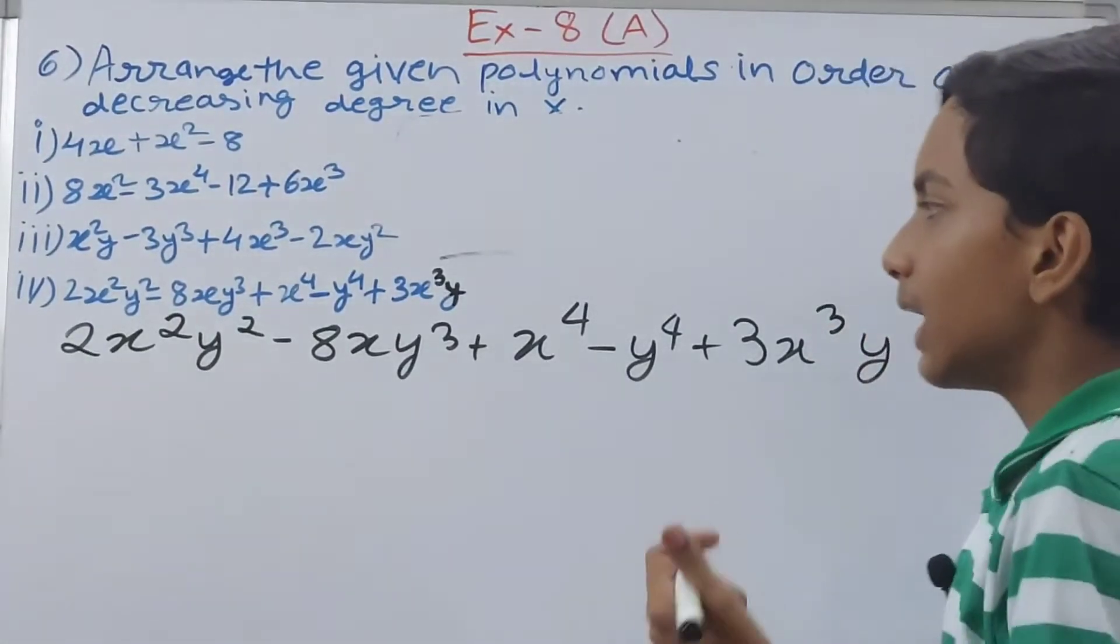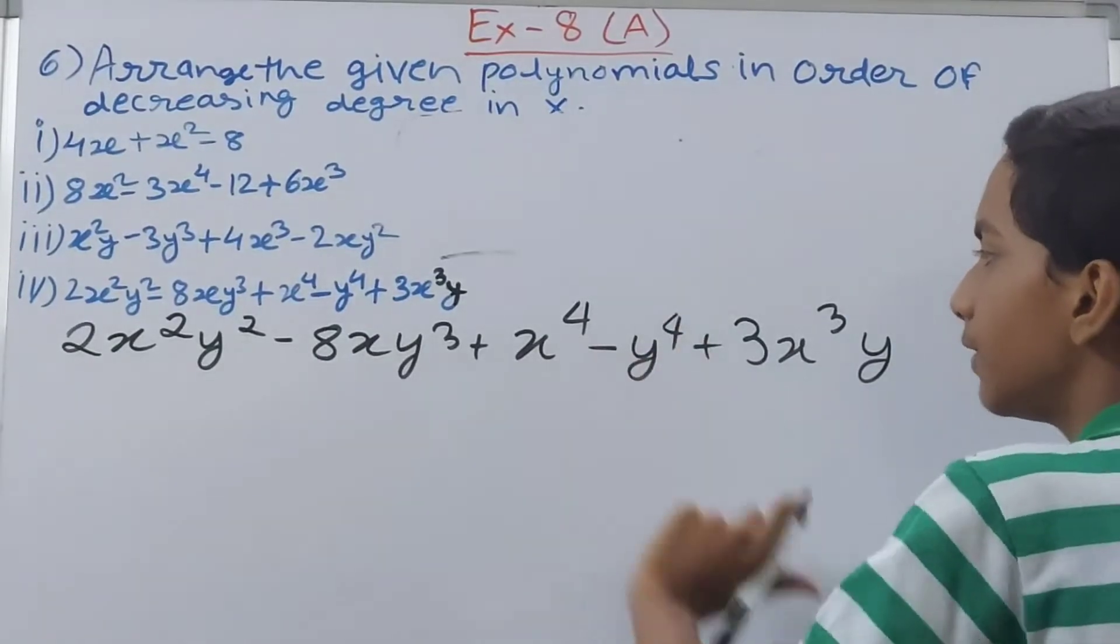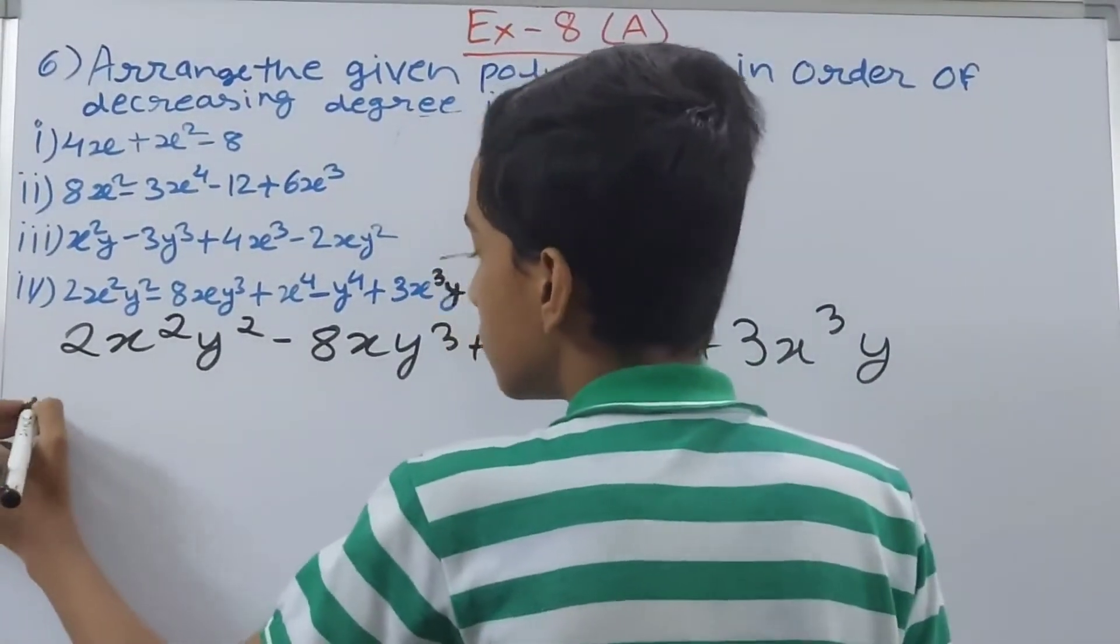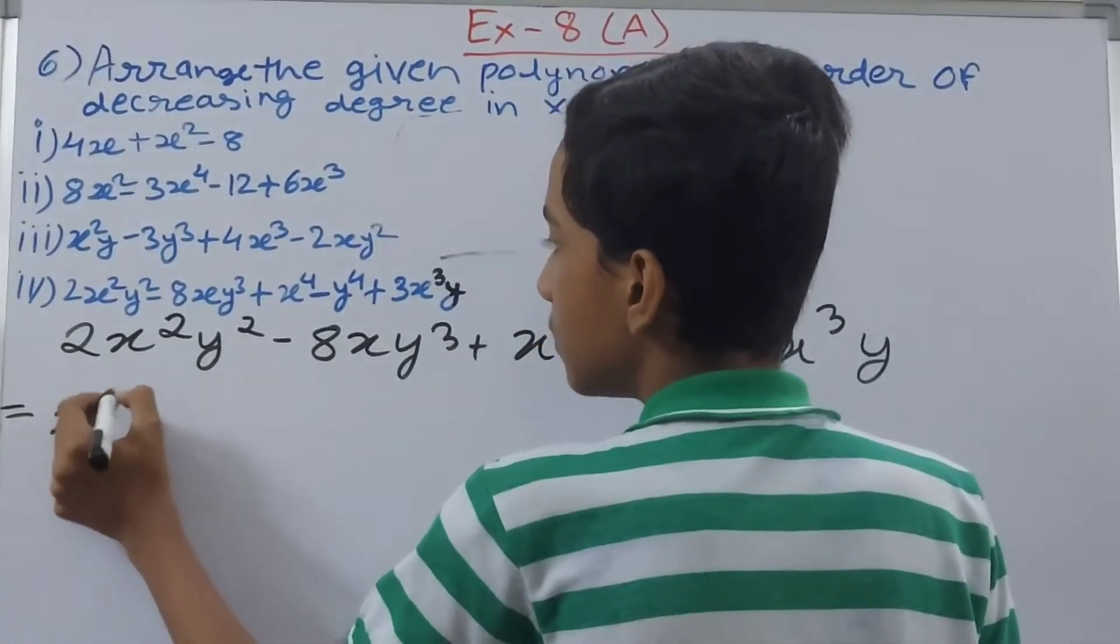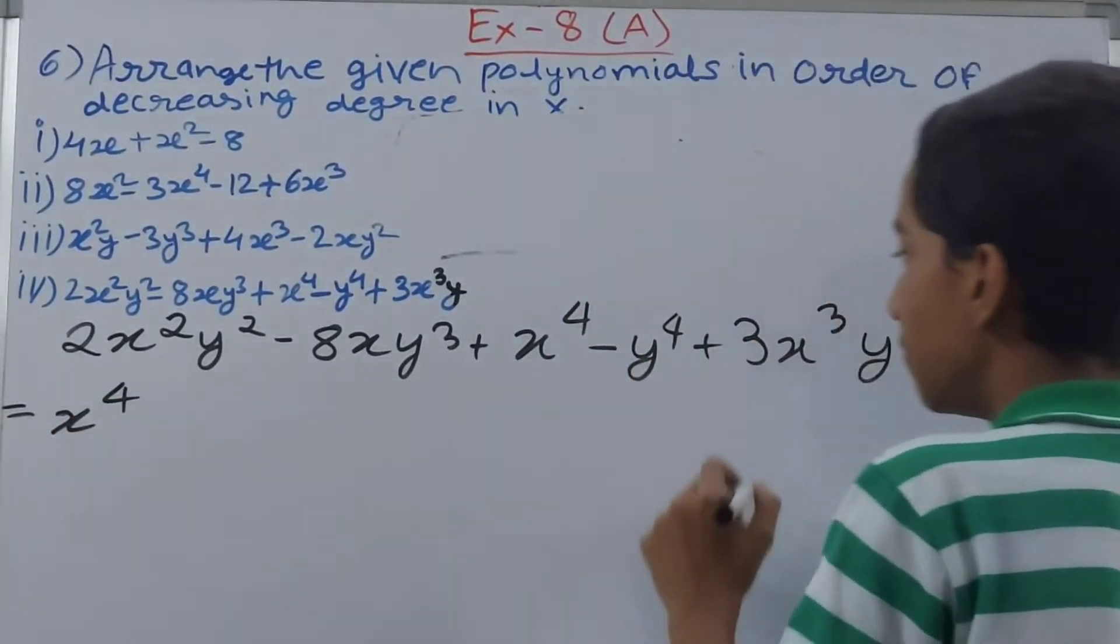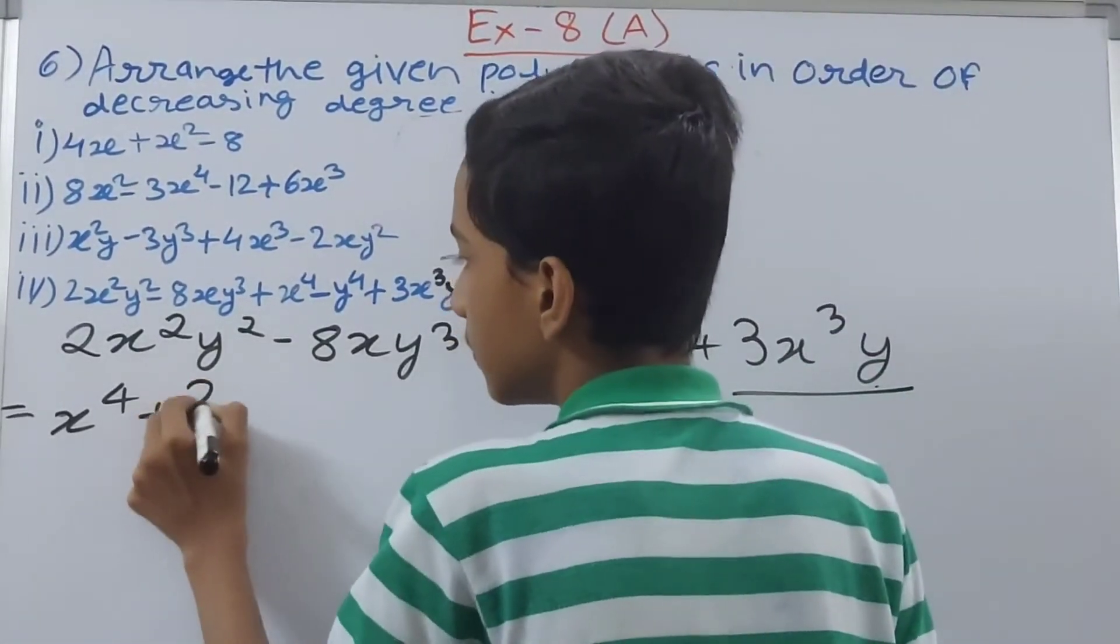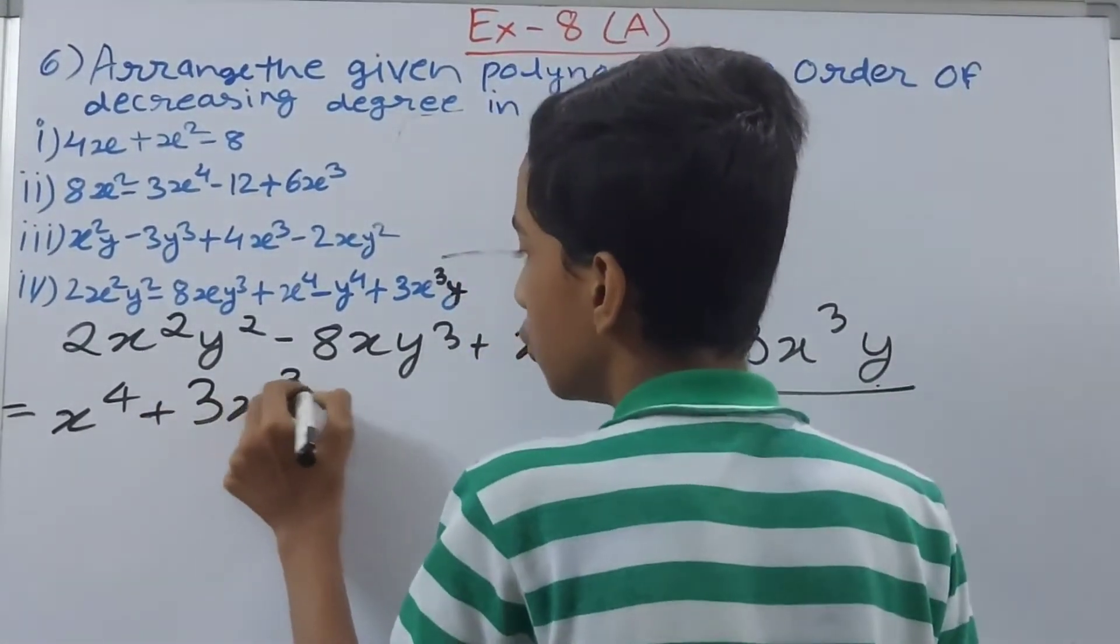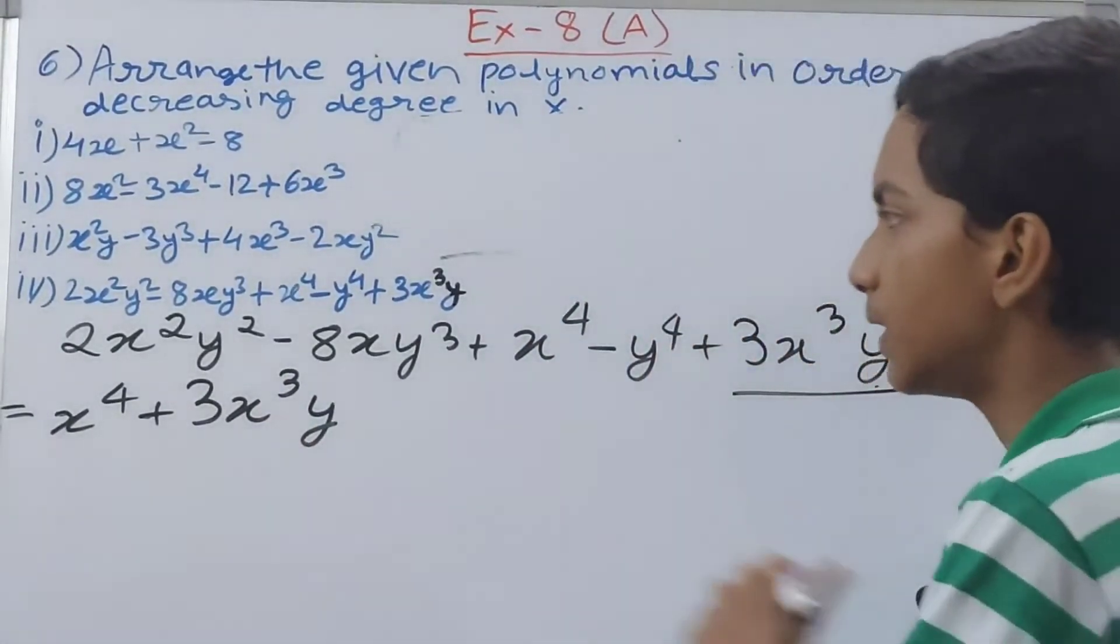Once again now we add them up, plus this one x here. Now we arrange them. So first of all one with 4 will come first, so you can write here x to the power 4. Then one with 3, so this one, plus 3x cube y. Now one which is square, 2, so this one, so plus 2x square y square.